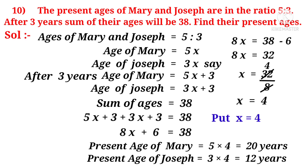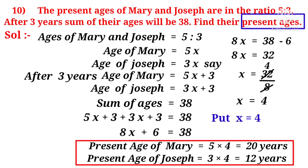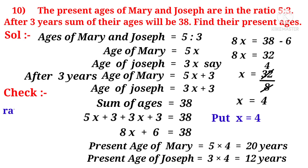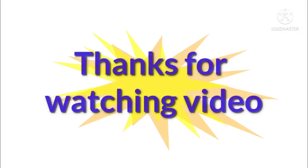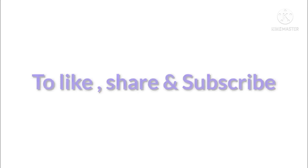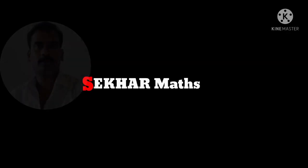Present age of Joseph is 3 times 4 equals 12. So, present age of Mary is 20 and Joseph is 12. Let us verify: the ratio of Mary to Joseph is 20:12, which simplifies by 4 to 5:3 — the same ratio given in the problem. So the answer is correct. Thanks for watching the video. Don't forget to subscribe!